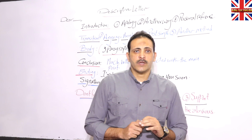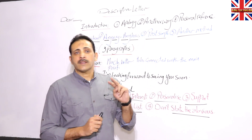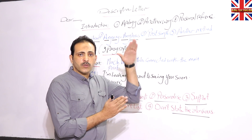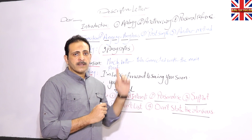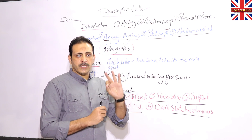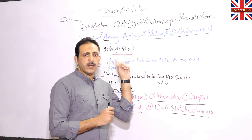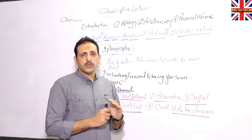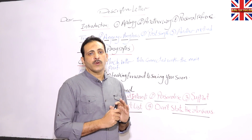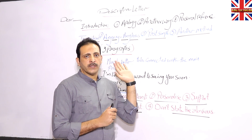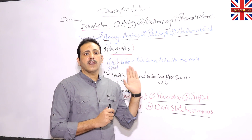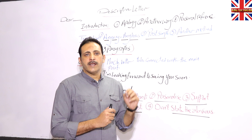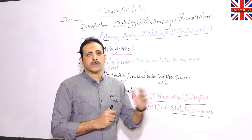When we are done with the introduction, we're supposed to write directly a transition sentence at the beginning of the body, because transition sentences link the introduction and the body together. A transition sentence can be used in three different ways. Number one, 'anyway' or 'anyhow', then a comma, and then we start by saying: 'I thought you might like to know something about my new life.' Or you can skip 'anyway' or 'anyhow' and say: 'I thought you might like to know something about my new life' or 'I thought to put pen to paper and tell you something about my new life or my new school.'